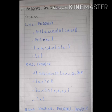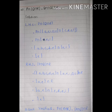On the left-hand side, we first solve Q intersection R. Q set is A, E, I, O, U and R set is C, D, E, I. Q intersection R gives us the common elements: E and I.